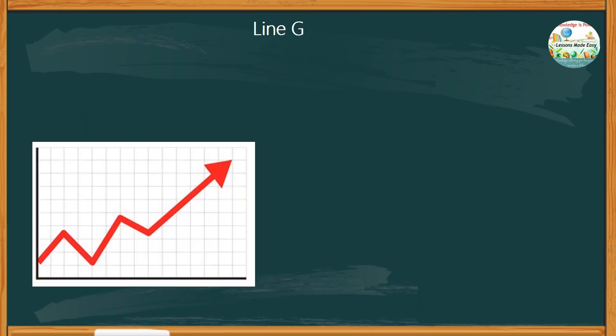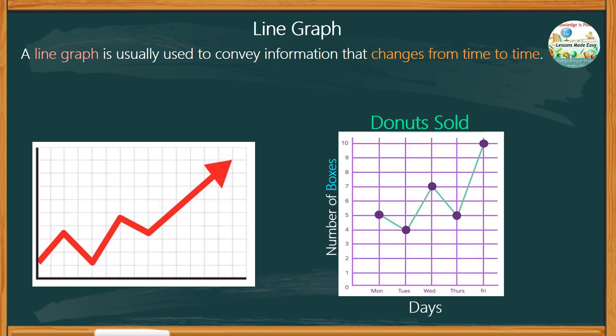What do you know about a line graph? A line graph is usually used to convey information that changes from time to time. It is a way of displaying data to easily see the trend over time. There are different types of line graphs. The example below is a simple line graph. It is formed when you draw just one line to connect the data points. It is also known as a linear graph.